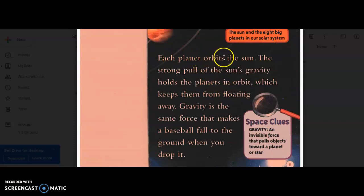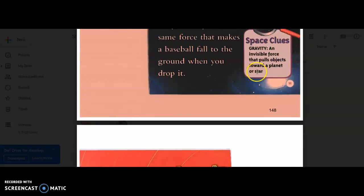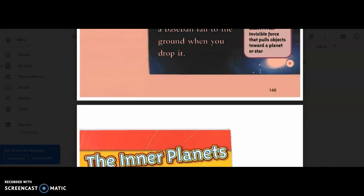Each planet orbits the sun. The strong pull of the sun's gravity holds the planets in orbit, which keeps them from floating away. Gravity is the same force that makes a baseball fall to the ground when you drop it. Space clues. Gravity is an invisible force that pulls objects toward a planet or star.